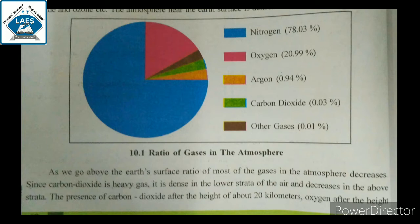See students, this circle shows the ratio of different kinds of gases. Nitrogen is 78.03 percentage, and it is the most in the atmosphere. After nitrogen, the second number is oxygen at 20.99 percentage. Argon is shown in orange color at 0.94 percentage. Carbon dioxide is green color at 0.03 percentage. And other gases are 0.01 percentage. So the most gas is nitrogen, and second is oxygen.